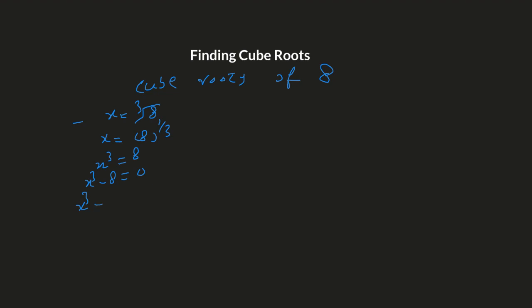We write X cubed minus eight as X cubed minus two cubed, which is the form a cubed minus b cubed. Applying the formula, we get X minus two times X squared plus 2X plus four equals zero. So the two factors are X minus two equals zero and X squared plus 2X plus four equals zero.